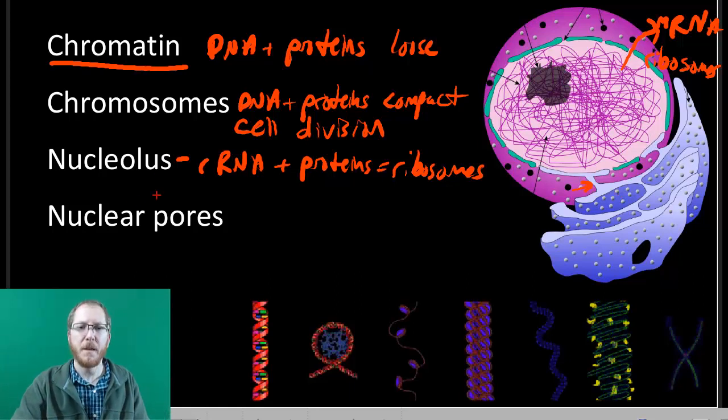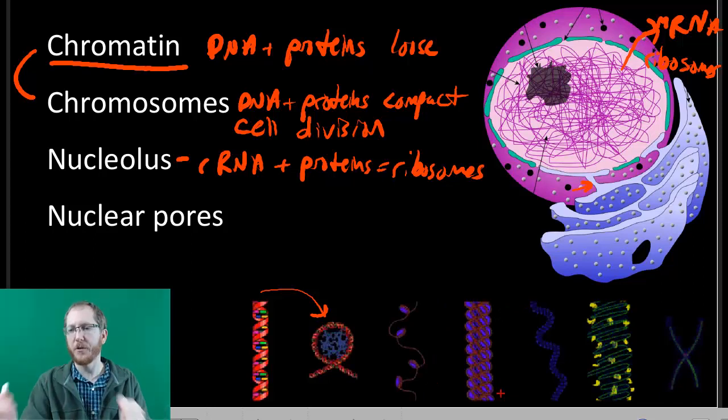And at the bottom here, this is just a pictorial representation of the difference between chromatin and chromosomes. You can see the DNA wraps around proteins. This is what this is showing us, proteins with DNA wrapped around. Then the proteins kind of bind together. They stick together to condense things.